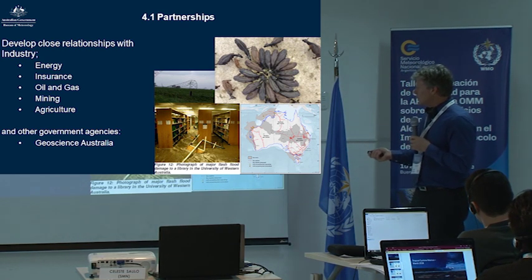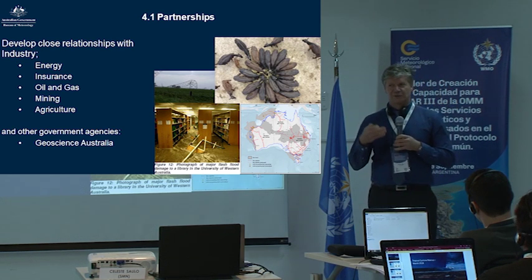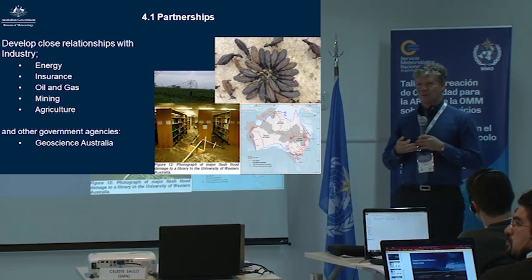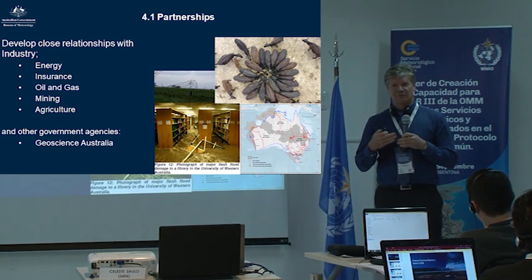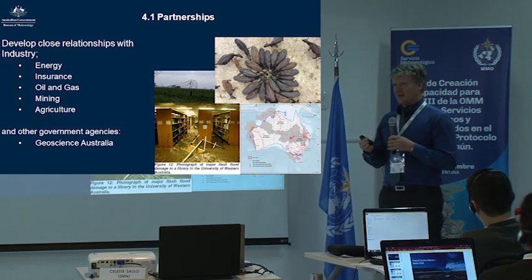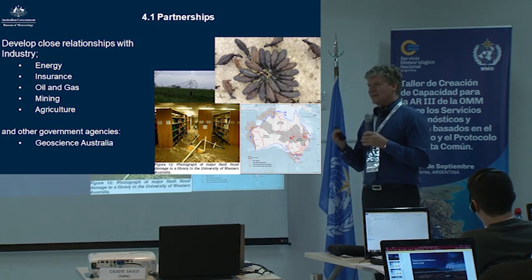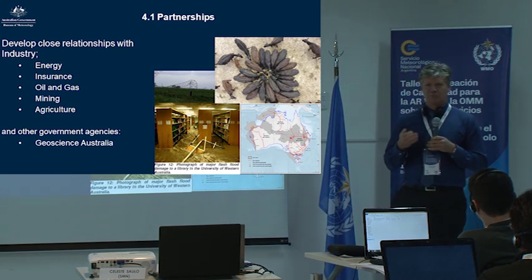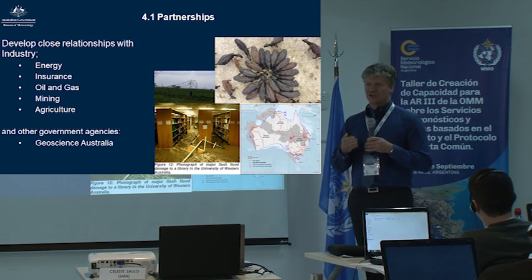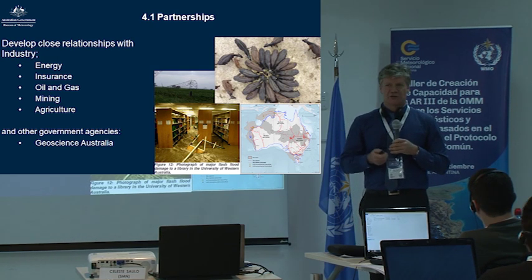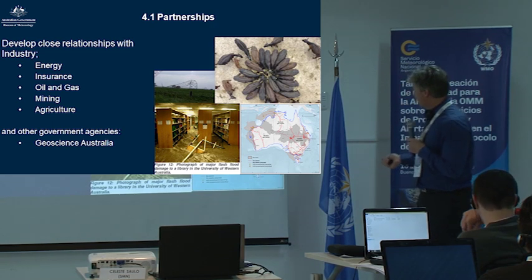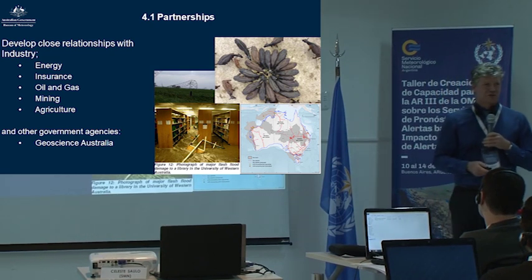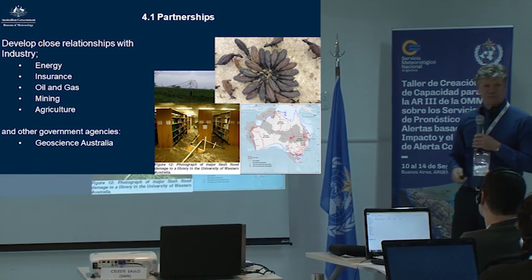Insurance — there's huge amounts of information we can get from the insurance industry from the exposure and vulnerability data they collect. There are certain people in the insurance industry who understand how much money they can make if our warnings are good and people take action ahead of events. It's a perfect partnership if we can make it work. Oil and gas: this image shows the gas pipelines around Australia, giving a good indication of where gas lines are exposed if there's a hazard.